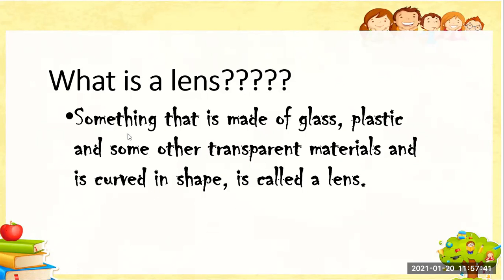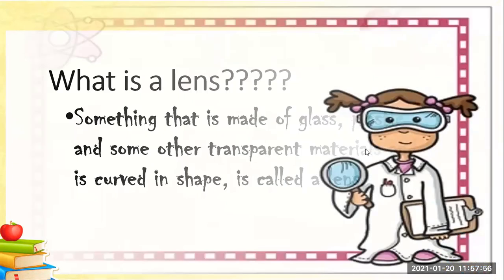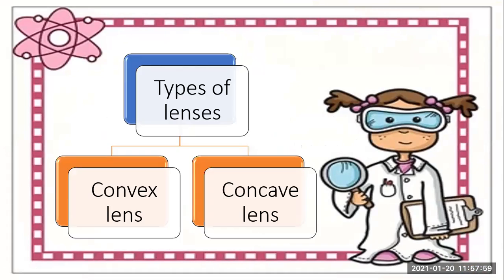Afterwards we came to know about two types of lenses. There are two main types of lenses, and they are named as convex lens and concave lens.